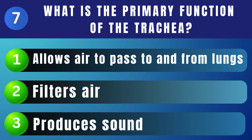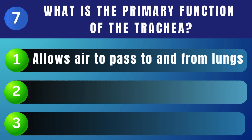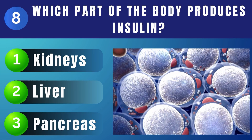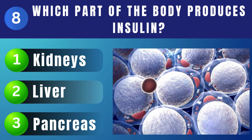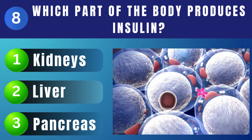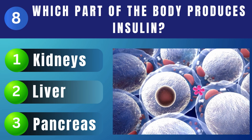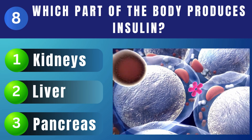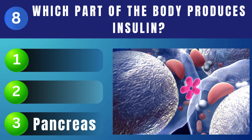What is the primary function of the trachea? Allows air to pass to and from the lungs. Which part of the body produces insulin? Pancreas.